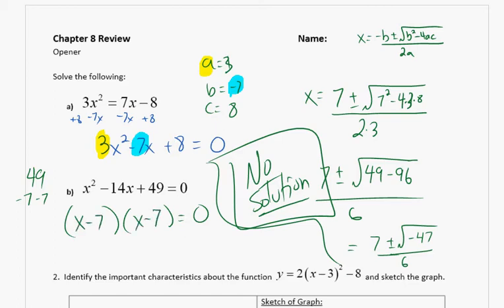So we've got the quadratic formula. We've got factoring. Those are two different ways when it says solve what we can do. So let's go on to number 2. So identify the important characteristics about the function.